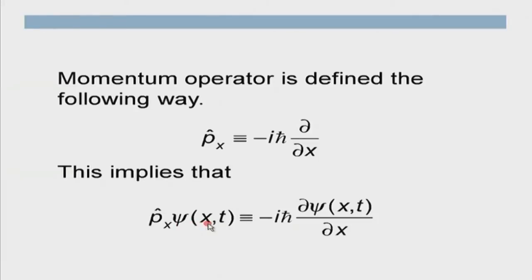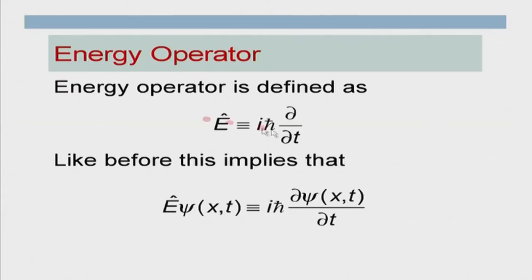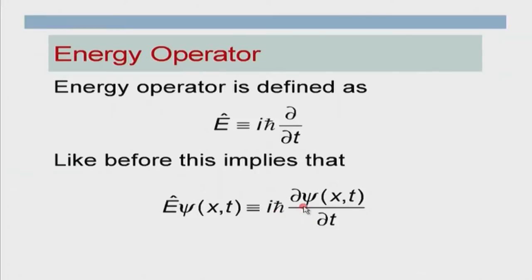So when p̂_x operates on psi, the outcome is −iħ ∂psi/∂x. Similarly, I define the energy operator as Ê = iħ ∂/∂t — note there is no negative sign here, unlike the momentum operator. This implies that when Ê operates on psi(x,t), the result is iħ ∂psi/∂t.